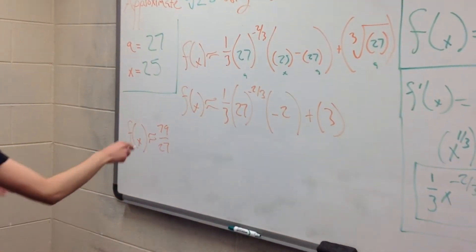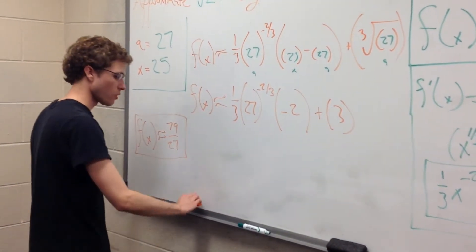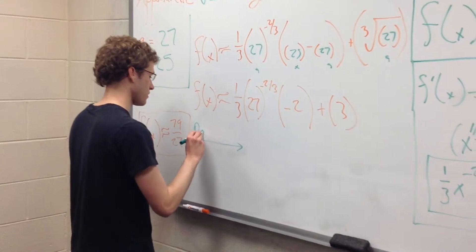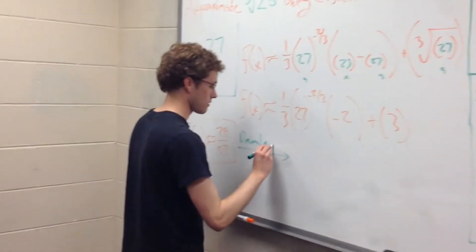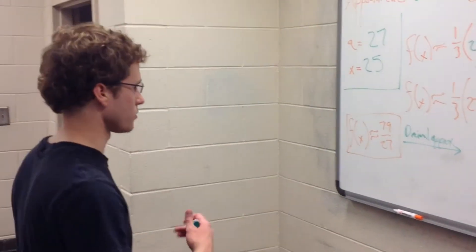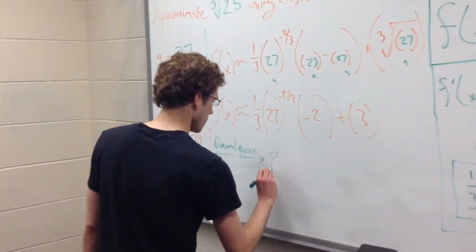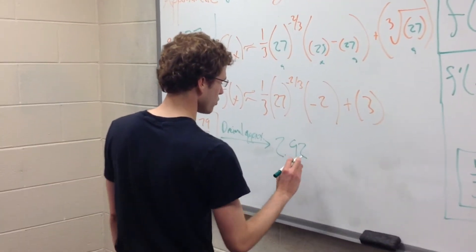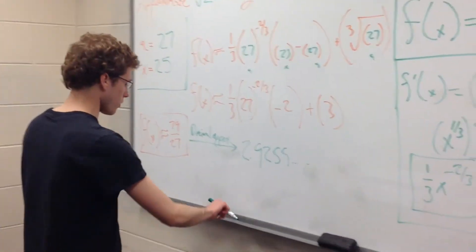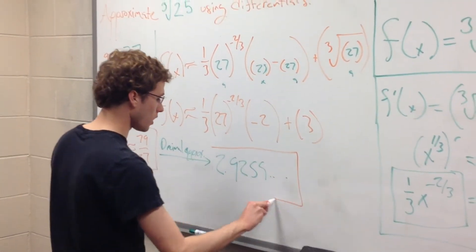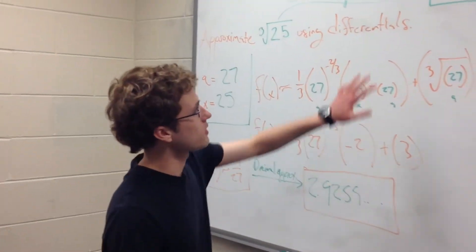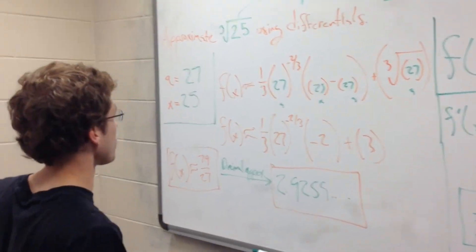So f of x is approximately equal to 79 over 27. Now, not hard, but 79 over 27 is still kind of ugly. So let's do a decimal approximation. And 79 over 27 should be around, let's see, 2.9259 something. So this is a value that is really close to the cube root of 25. Once again, it is only an approximation because we're using differentials.